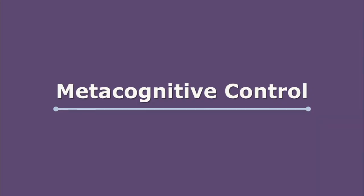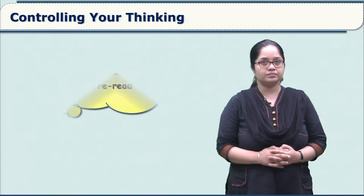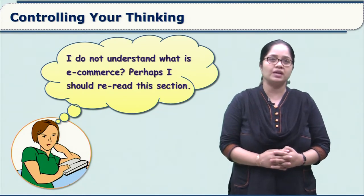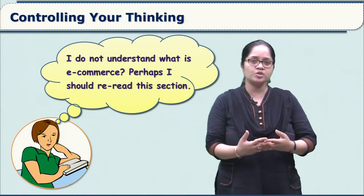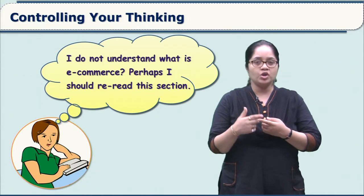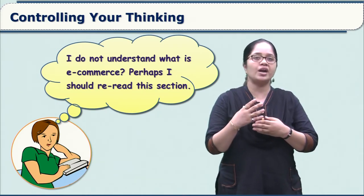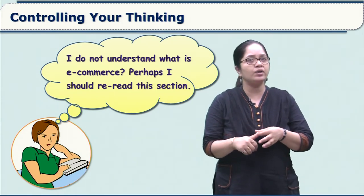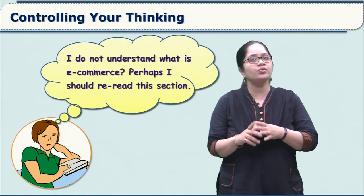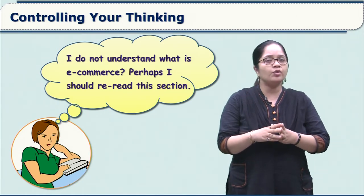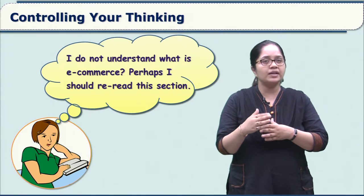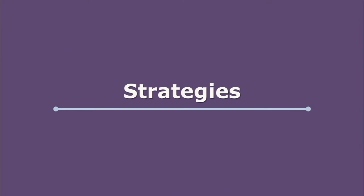The second part of metacognition is metacognitive control or regulation — controlling your thinking. This is a stage where both cognition and metacognition are working simultaneously: you are paying attention to your strategies and also rechecking the content. Look at this picture — the girl is saying she doesn't understand what e-commerce is and thinks she should re-read that section. She is focusing on the content she cannot understand while also trying to regulate it by planning to re-read the section.